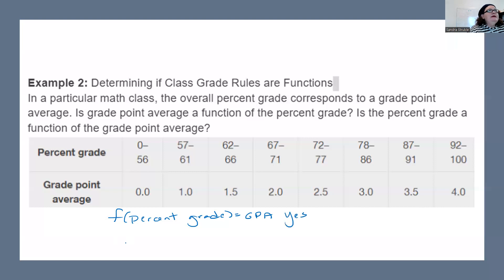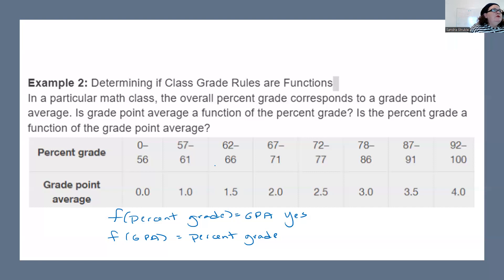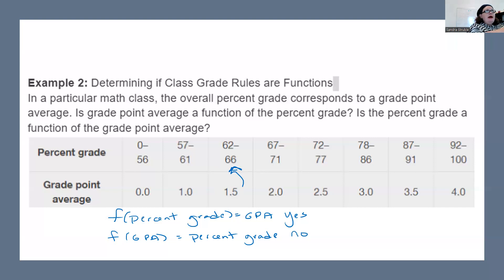The next question: is the percent grade a function of the GPA? So function of GPA equals percent grade. Now we look at the GPAs. Does 1.5 only have one percent grade? Looking at 1.5, we could have 62, 63, 64, 65, or 66. So no — the function of GPA equal to percent grade is not a function, because there's more than one output.